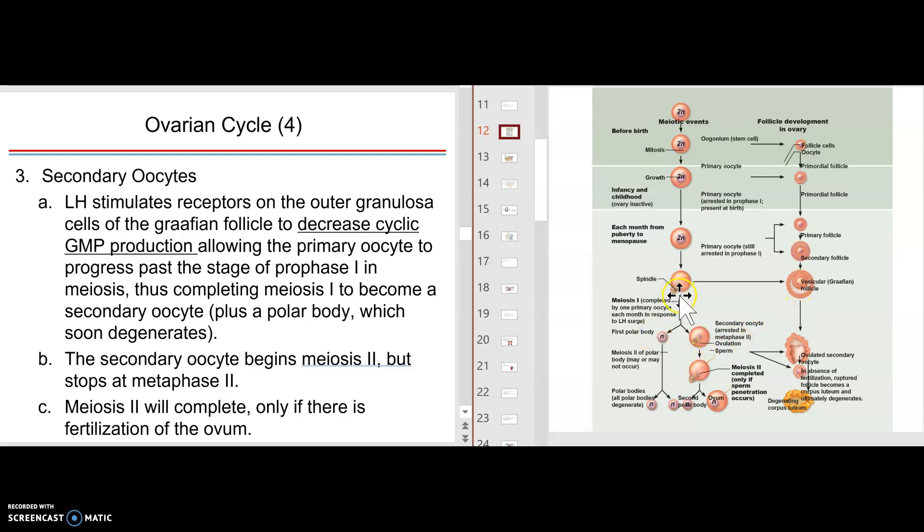Now when it gets to metaphase two and this is meiosis one, then you have one polar body and the egg right here. Okay, and then it'll stay in meiosis two, metaphase two, unless there's fertilization and then it'll take it all the way there. Alright, so we'll go a little further.